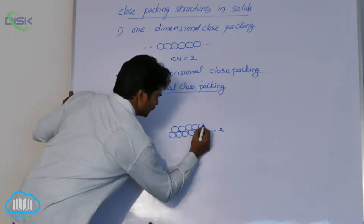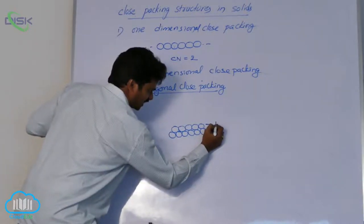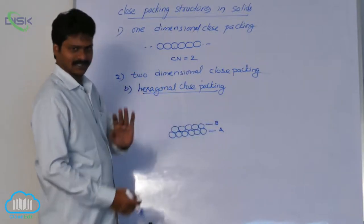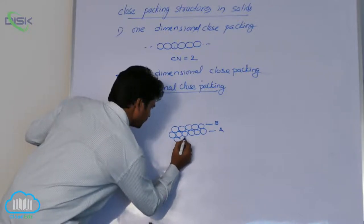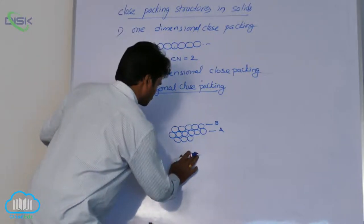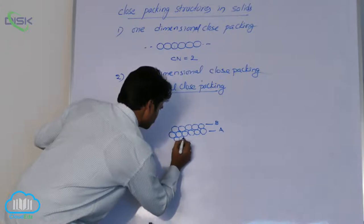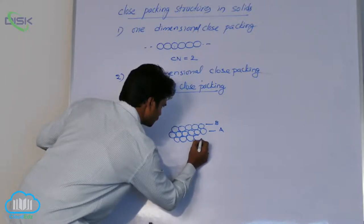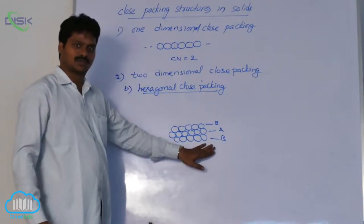So, in this way we get the second row, which is different than A — that is why it is named as row B. Another row is placed such that it also occupies the depressions. This row is also named as B.